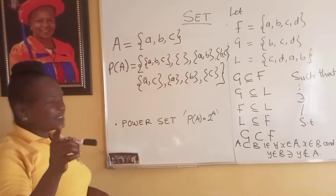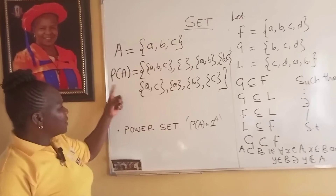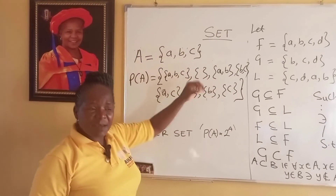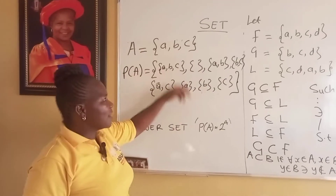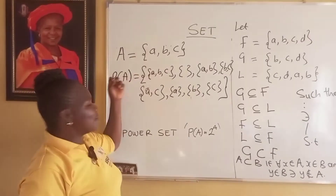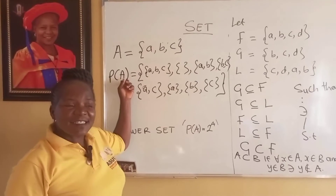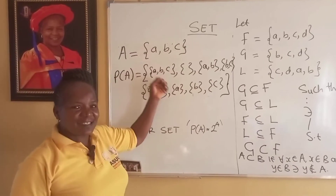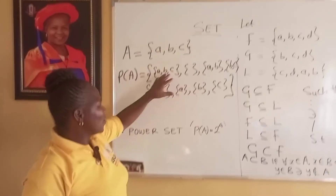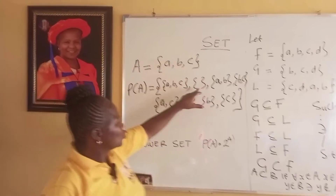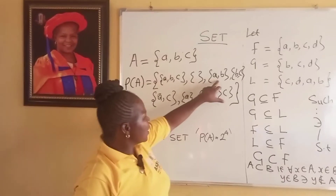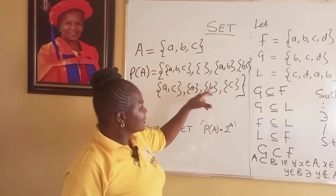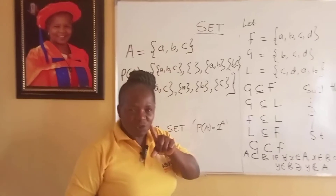Let's write out the power set of A = {a, b, c}. The power set is: {A, ∅, {a}, {b}, {c}, {a,b}, {b,c}, {a,c}}. Let's count the number of elements: 1, 2, 3, 4, 5, 6, 7, 8.